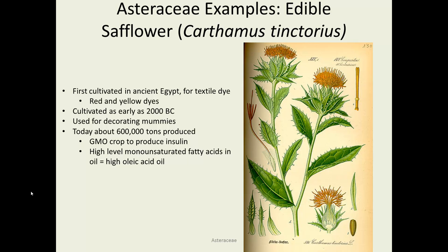Safflower is another agricultural species, cultivated since ancient Egypt when it was used for dye — red and yellow dyes could be extracted from it. Today it's more used for the oil it produces. It's high in oleic acid, which some people think is better for you. One variety has been modified to produce insulin, which is very important for people who are diabetic, as it can be quite an expensive prescription to maintain.